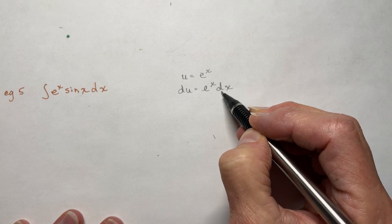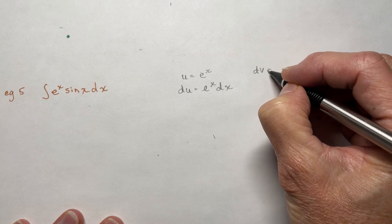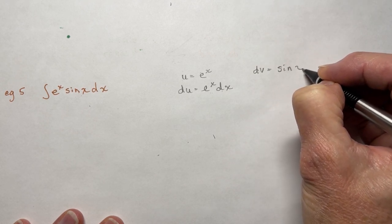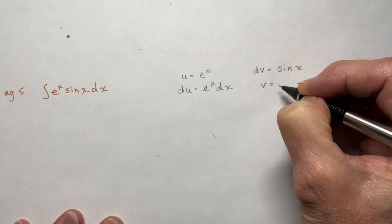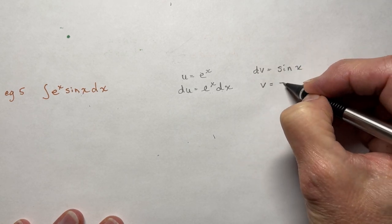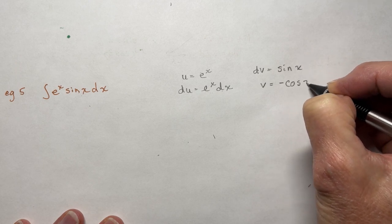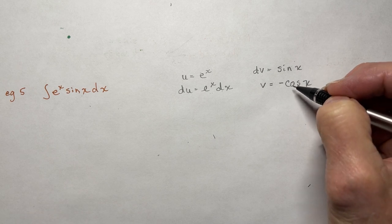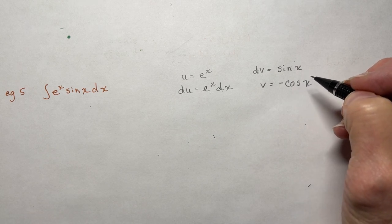You can try it the other way. So if dv is sin(x), then v is going to be negative cos(x), because the derivative of cos is negative sine — so it has to be negative cos(x). I always check that, especially with the signs.